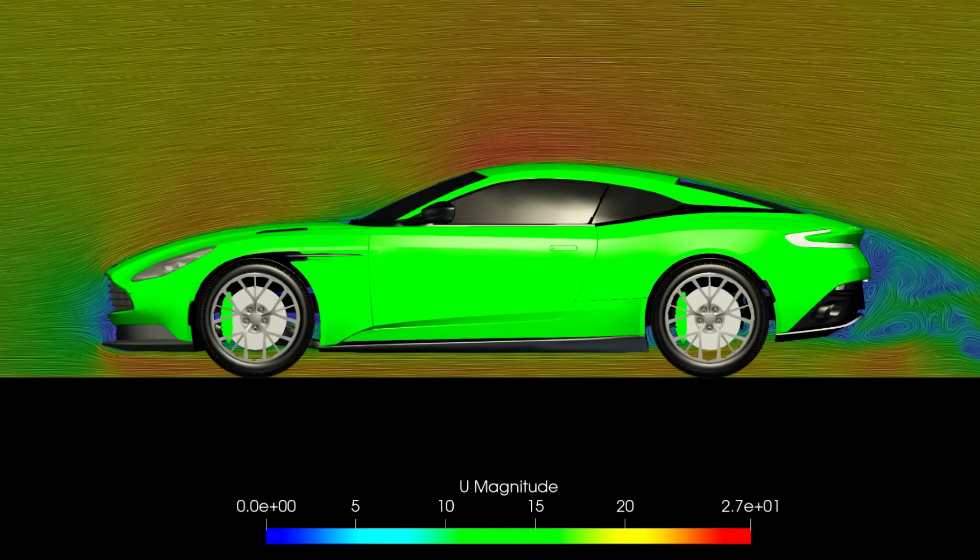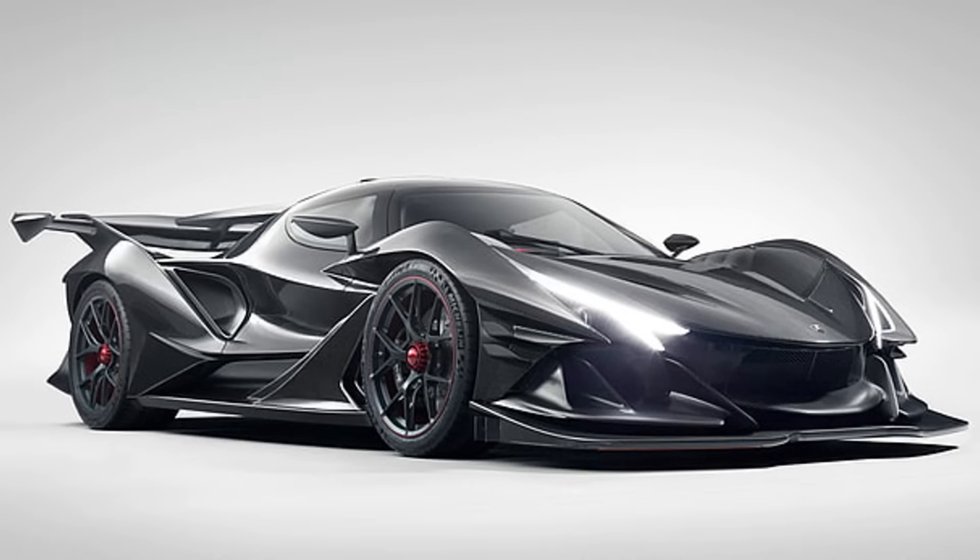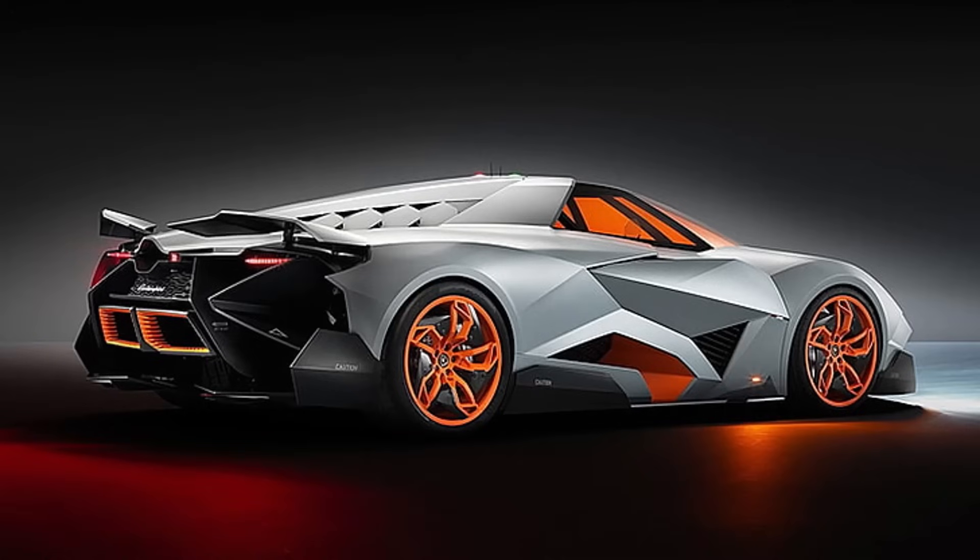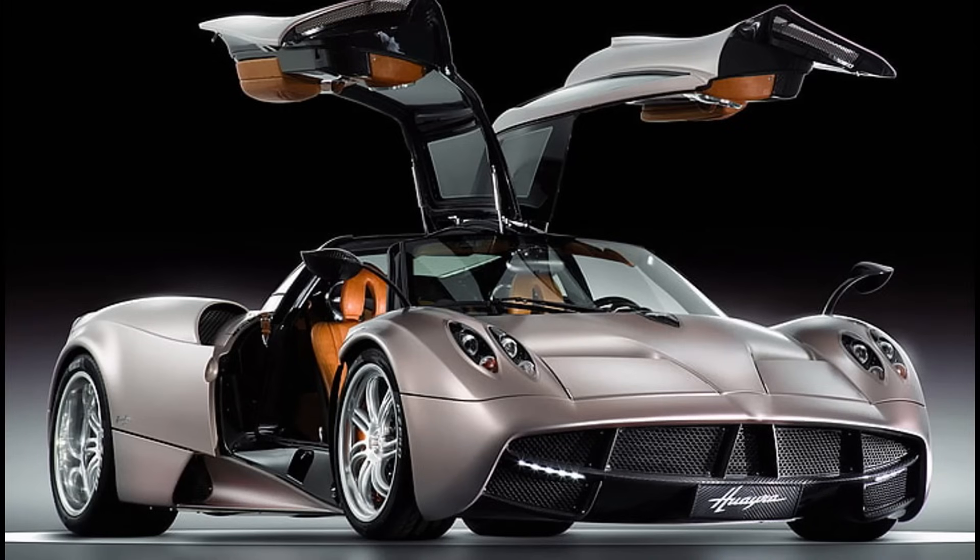It might not seem like a big deal, but that difference greatly affects the car's performance. As mentioned earlier, the typical supercar hovers around 0.34 for its drag coefficient with some of the more aggressive ones getting closer to 0.4. While that is definitely bad for top speed, it's a necessary price that needs to be paid to produce so much downforce.